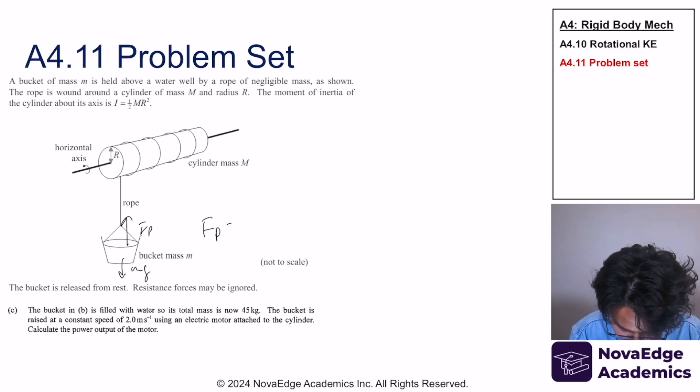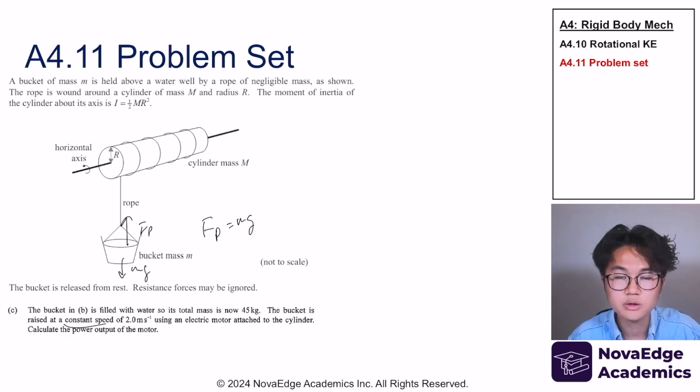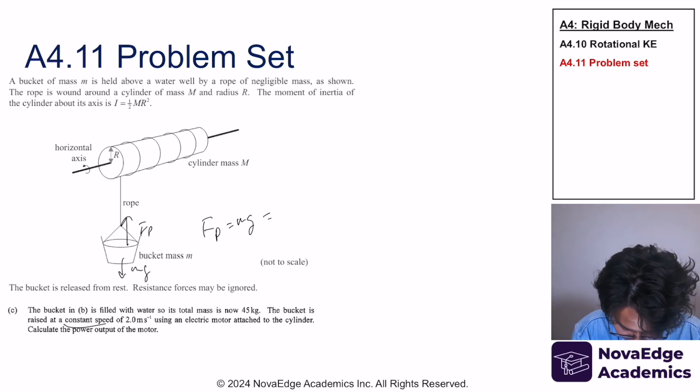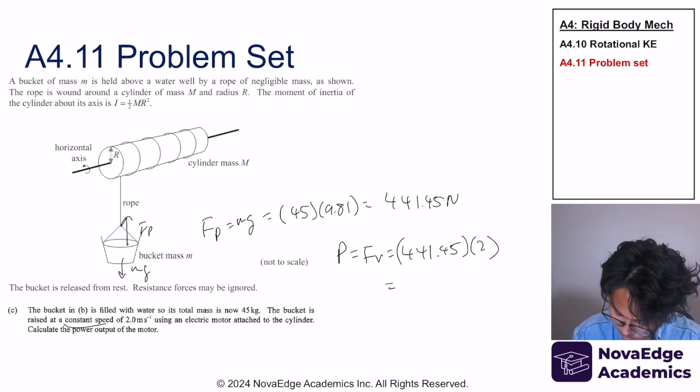The pulling force has to be equal to mg because we have a constant speed. So mg is equal to 45 times 9.81, which is 441.45 newtons. And we know the power is equal to Fv, so that equals 882.9 watts. Put it in 2 sig figs, that is 880 watts.